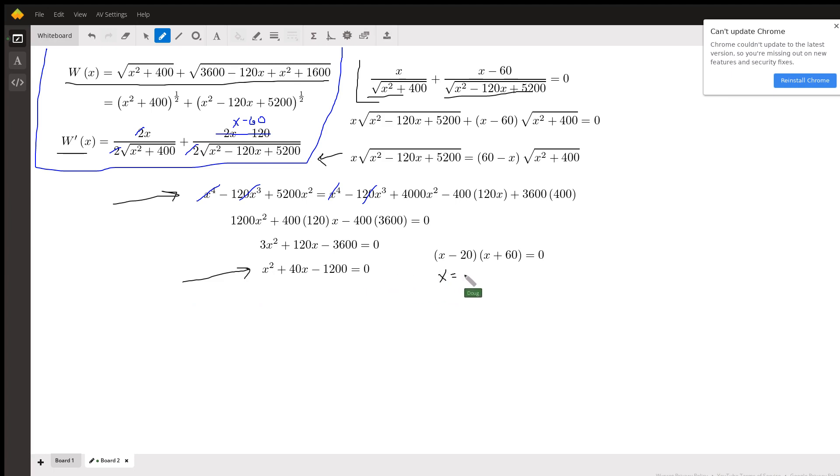So there are your critical numbers. We can reject the negative 60 because we're dealing with the distance.